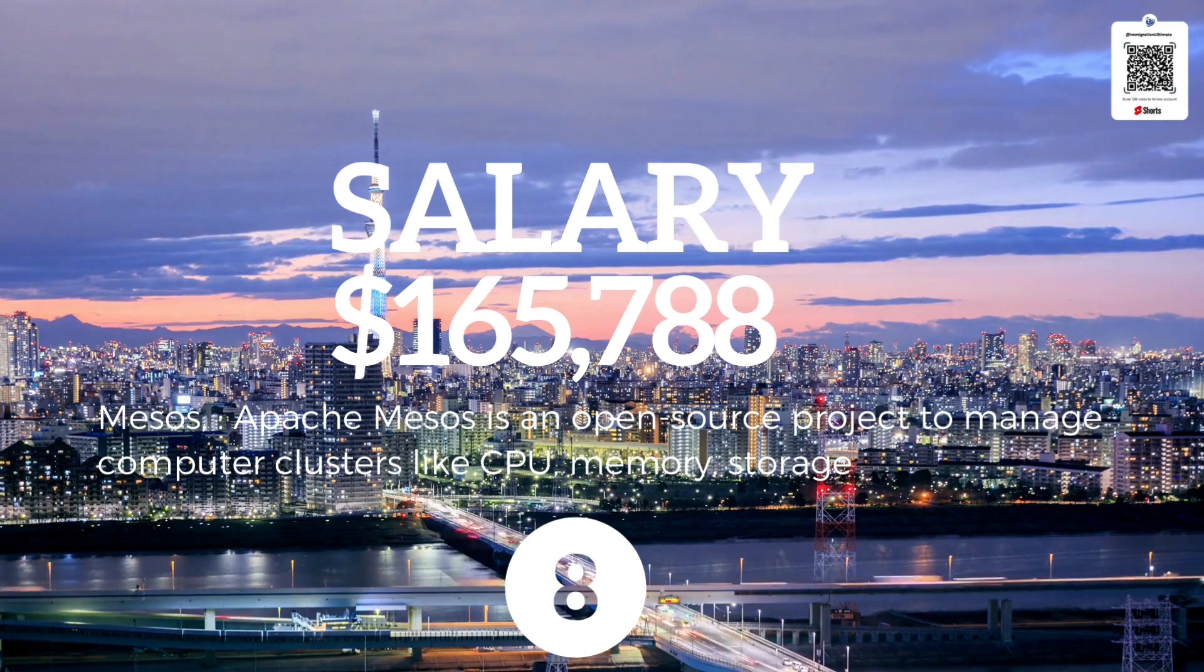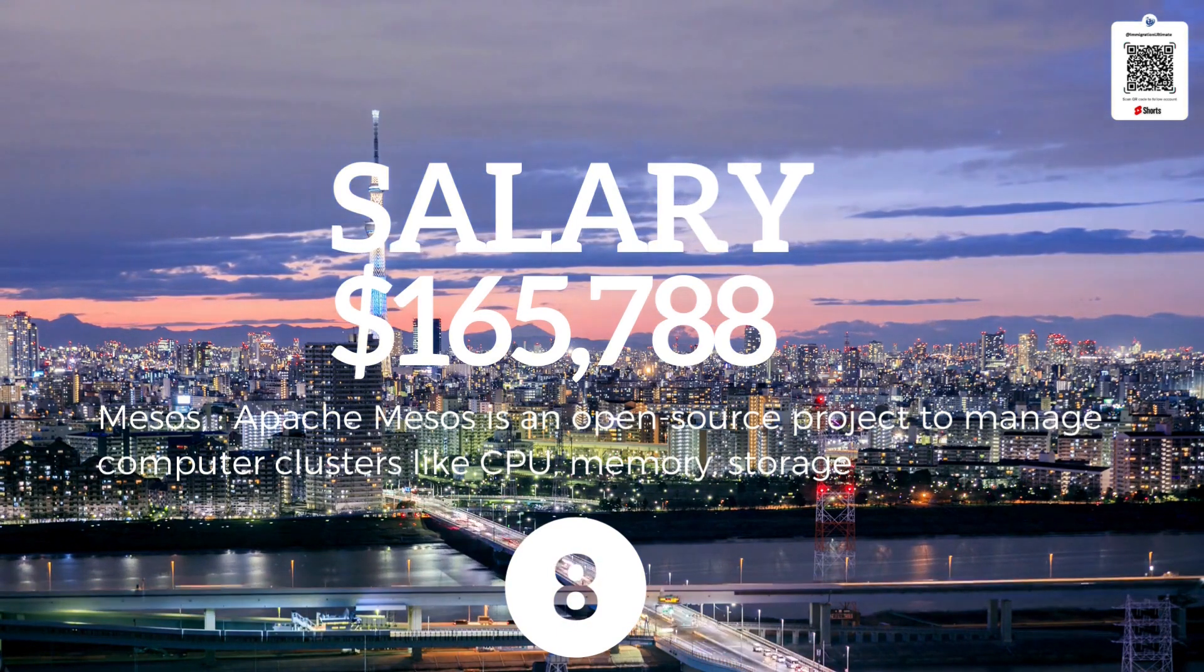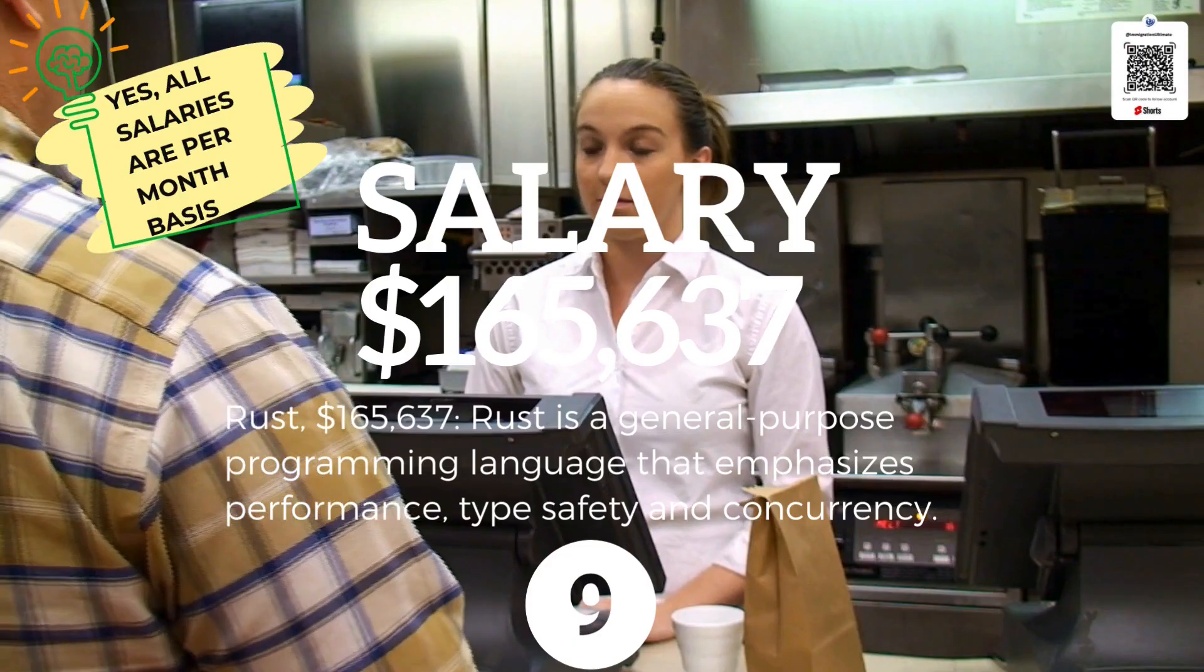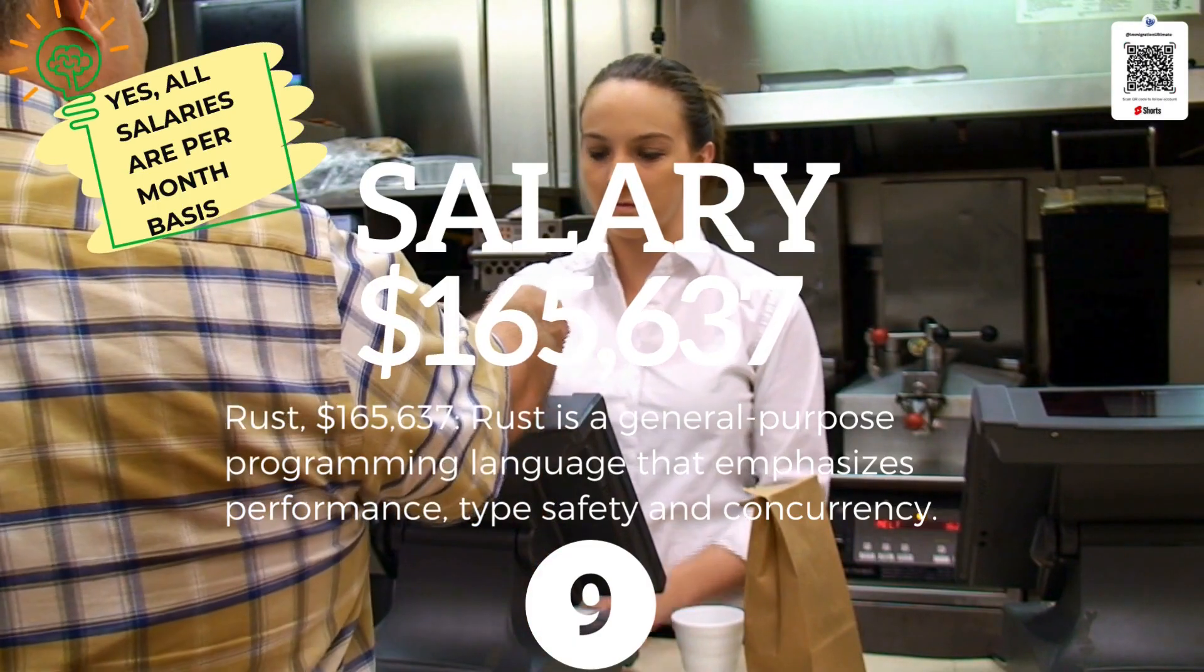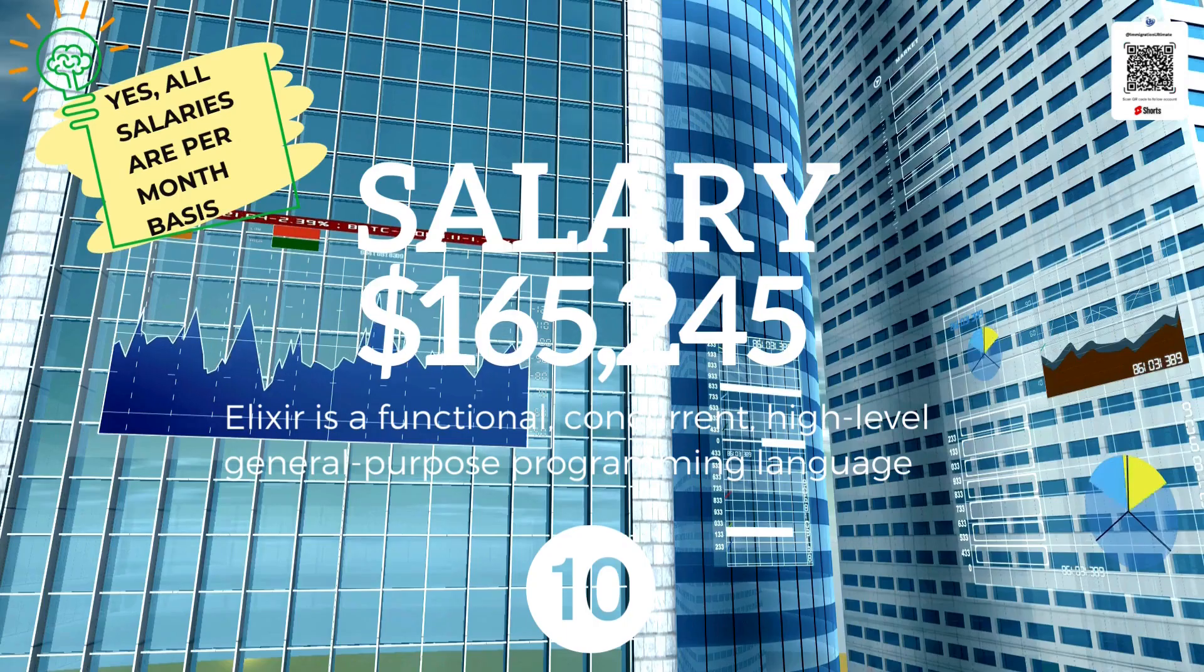Number eight is Mesos at $165,788, which is Apache Mesos, an open-source project to manage computer clusters like CPU, memory, storage, and other compute resources. Number nine is Rust at $165,637, a general-purpose programming language that emphasizes performance, type safety, and concurrency.